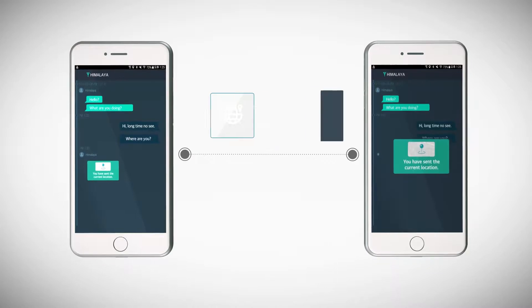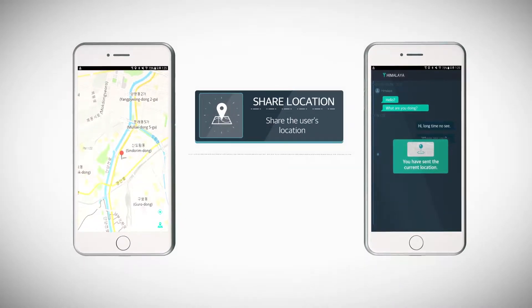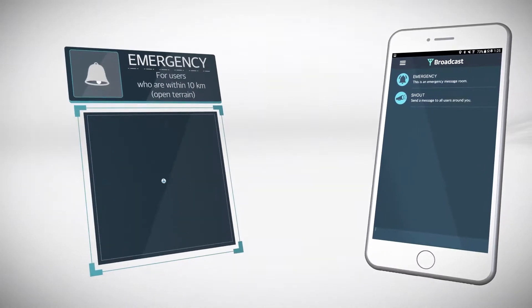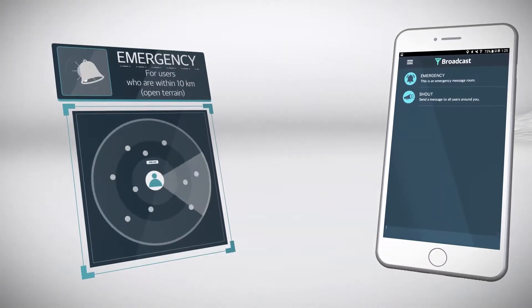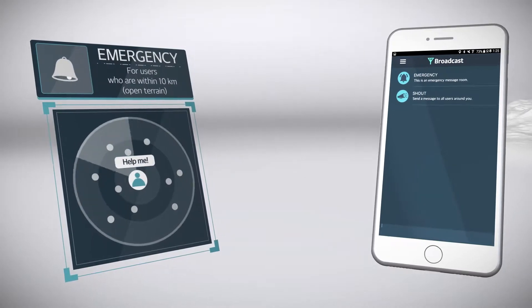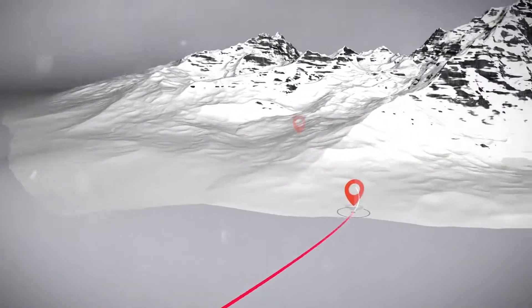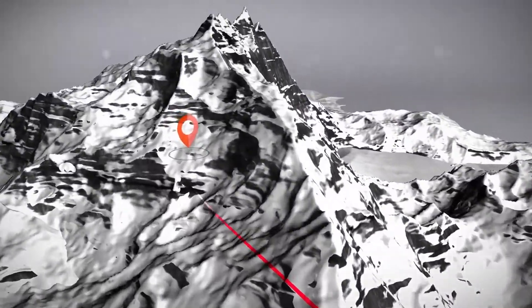It can also share user location data through the location sharing function. Through the emergency mode, you can send an emergency relief message to other LORI 2 users within 10 kilometers of open terrain. It is also possible to launch quick rescue operation by checking the victim's location and migration path.